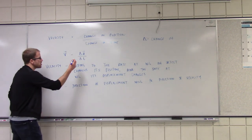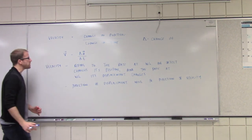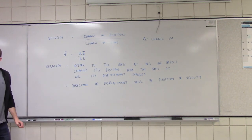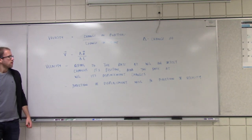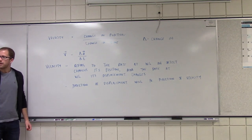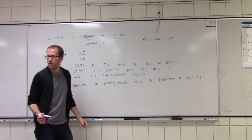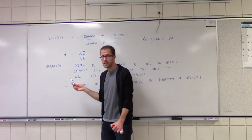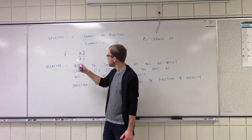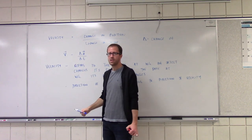So this little hat — this little arrow — represents that it is a vector quantity, and thus it has a direction. That's why speed doesn't have that little hat on it, whereas velocity does. Velocity has a direction, and our displacement has a direction.